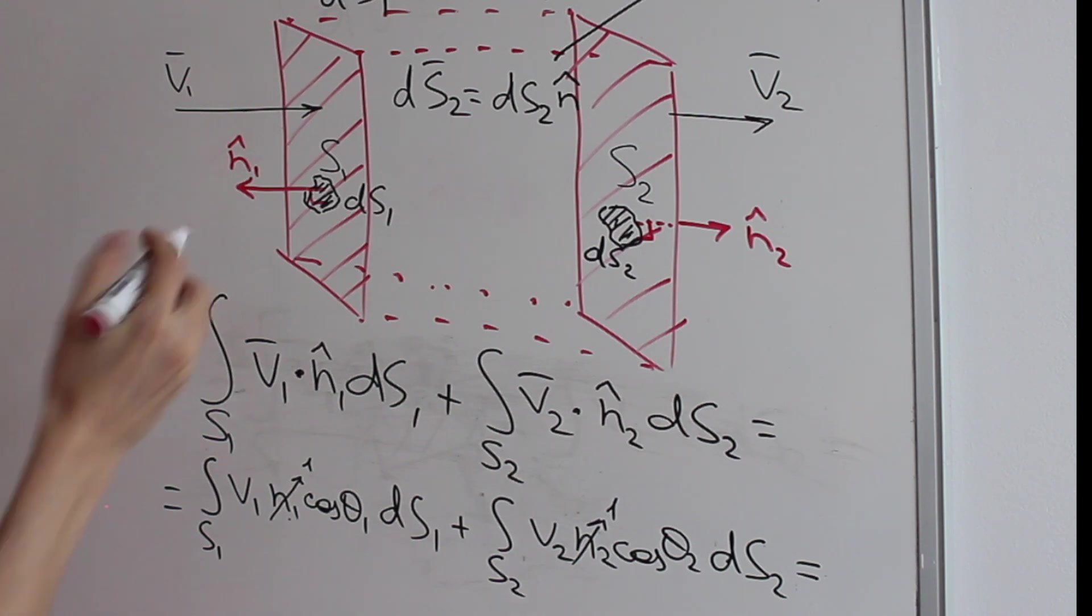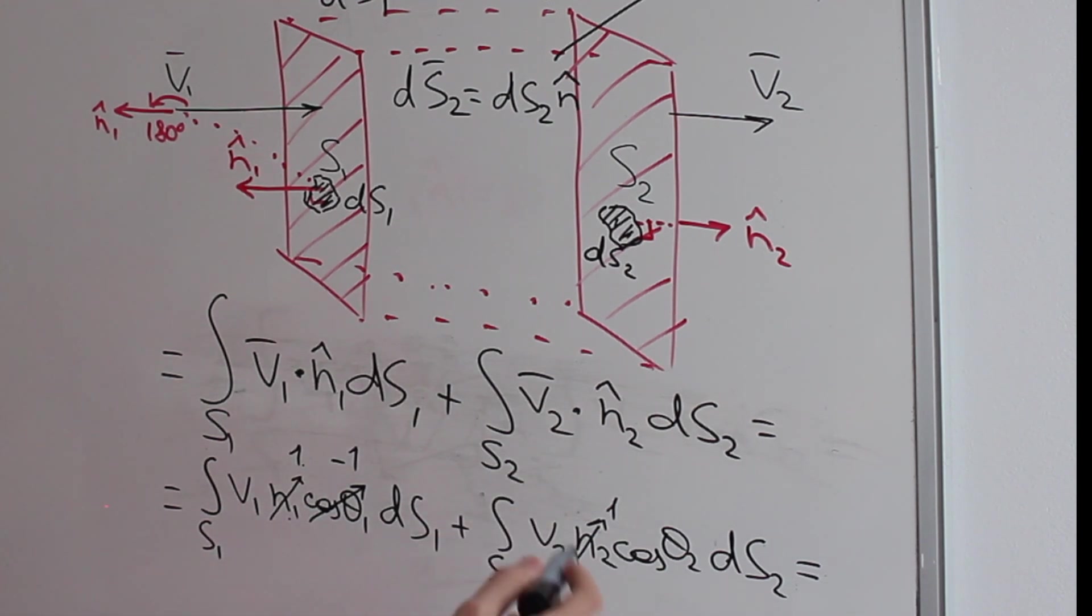Well, if we look here and we transfer our n hat here, the cosine of the angle is going to be 180 degrees. So what's the cosine of 180 is negative 1. ds1 stays the same because we can't simplify this little surface here.